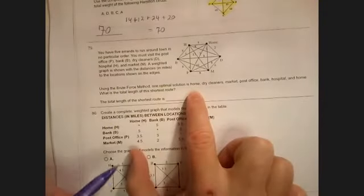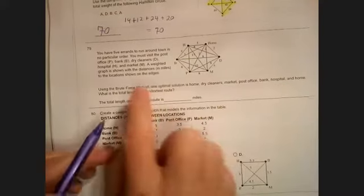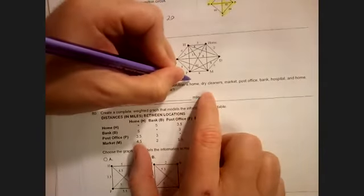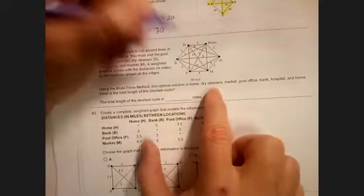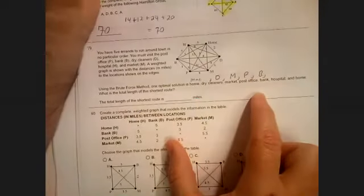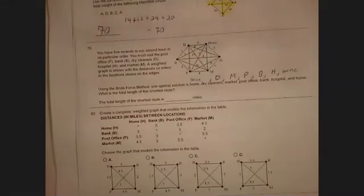All right, number 79. We're running some errands. Of course, if we run errands, we have to come back home at some point. They tell you that one solution is home, dry cleaners, market, post office, bank, hospital, home. We need to look at what each of these are labeled. Home is home, dry cleaners is D, market is capital M, post office is capital P, bank is capital B, hospital is capital H, and back to home.